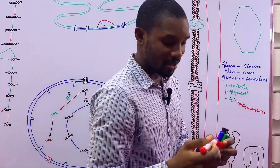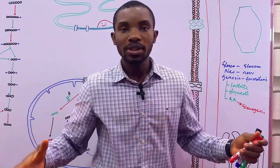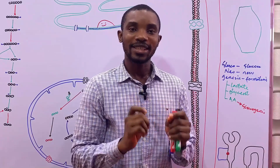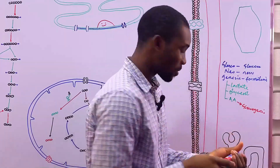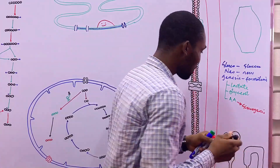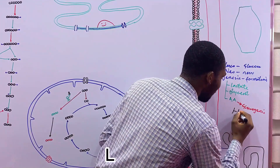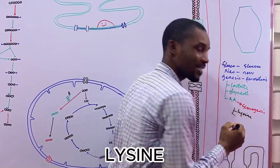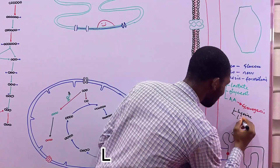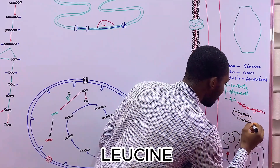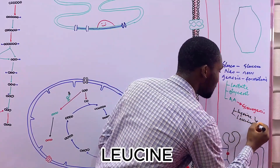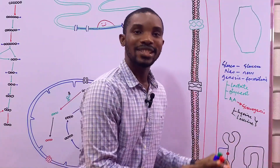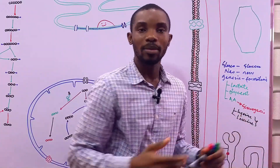Of all 20 amino acids, all are glucogenic except two. Those two are lysine and leucine. Lysine and leucine are not glucogenic — they are strictly ketogenic, so they can only be used to form ketone bodies.